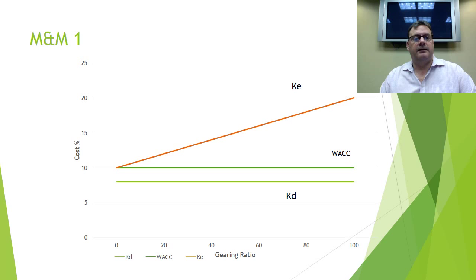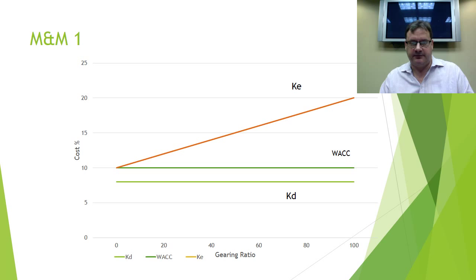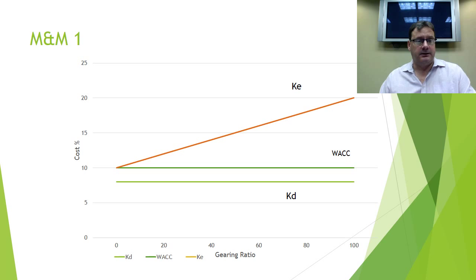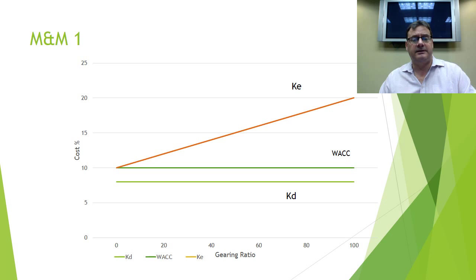Modigliani and Miller took that mathematical relationship one step further. They said: as you issue debt, debt is cheaper, so everything else being equal we'd expect our cost of capital to fall. But Modigliani and Miller said it doesn't fall, because as you have more debt your cost of equity rises. The cost of equity rises at such a rate that your weighted average cost of capital — the middle dark line on the graph — stays exactly the same.